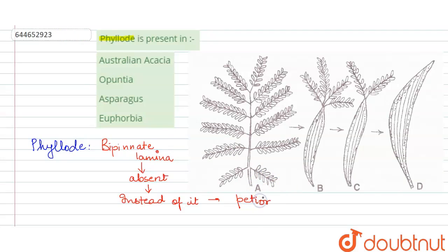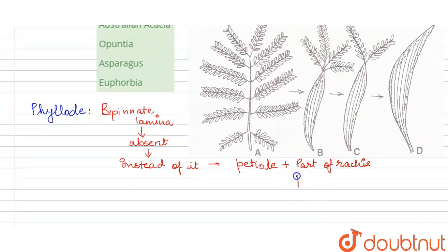Instead, what we see, the petiole and the part of the rachis, petiole plus part of rachis, they become flattened into sickle shape. They become flattened and they get the shape of sickle.